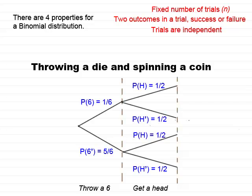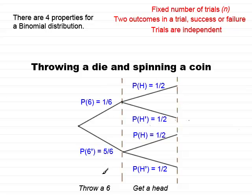What about this tree diagram, where I throw a die and I spin a coin? I've got a fixed number of trials — two trials again. The first trial is where I'm looking at throwing a six, and the second trial is where I spin the coin and I'm looking at getting a head. So I have two outcomes in each trial — success or failure: either getting a six or not getting a six, and either getting a head or not getting a head. Are the trials independent? Well, of course they are, because when I spin a coin it is unaffected by throwing a die.